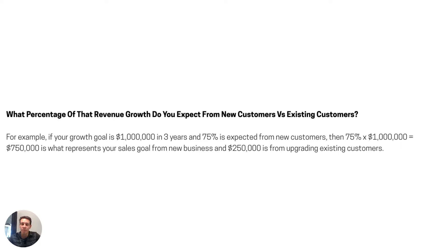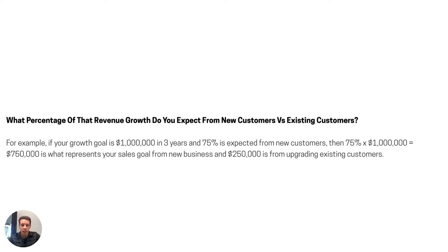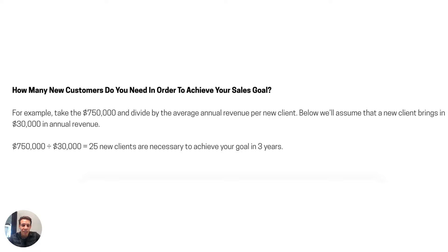The next question: what percentage of that revenue growth do you expect from new customers versus existing customers? With that hypothetical example of growing annual revenue by a million dollars in three years, let's say 75% is expected from new customers. That means 75% times a million equals $750K — that's your sales goal for new business. The other $250K comes from upselling projects or existing customers. That $750K is the number your sales and marketing people will be laser-focused on.